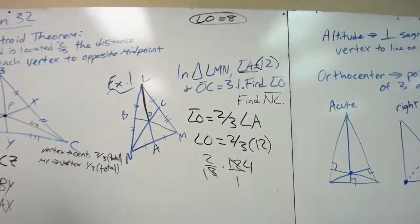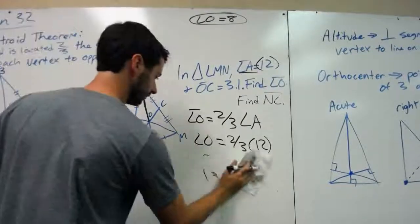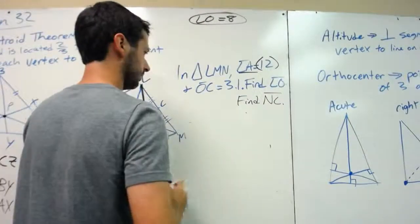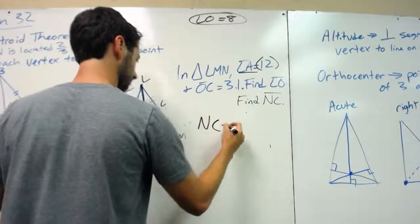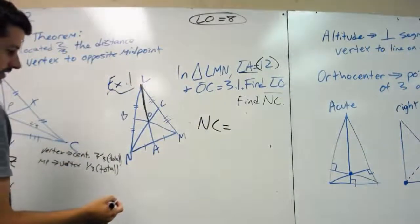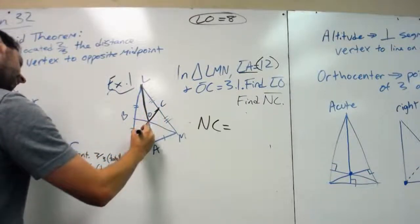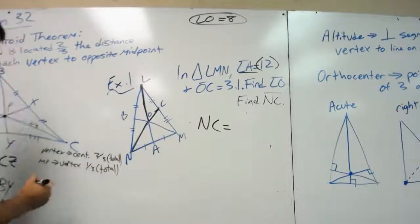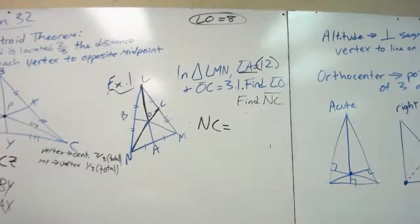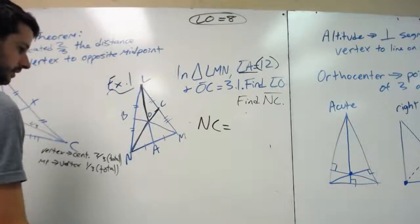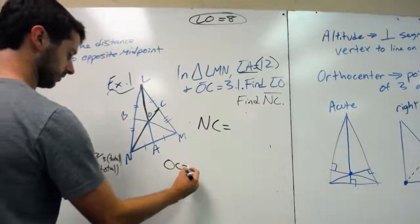Now we need to find NC. Let's see where NC is. NC is the total line. So we need to find the total amount there. Let's look at what we know. We already know that OC equals 3.1. Okay. OC equals 3.1.